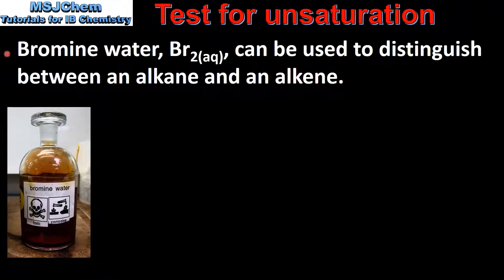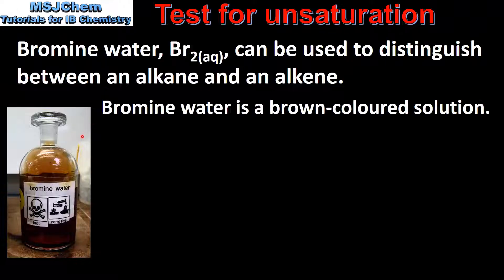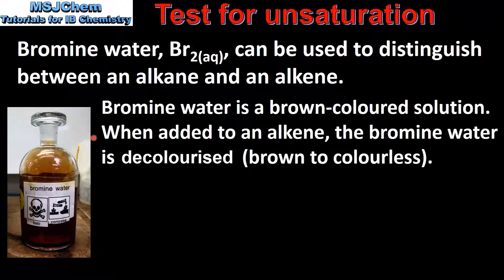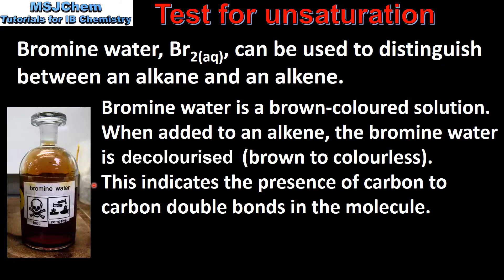Next we look at the test for unsaturation. Bromine water can be used to distinguish between an alkane and an alkene. Bromine water is a brown colored solution. When added to an alkene the bromine water is decolorized — the color change will be brown to colorless. This indicates the presence of carbon to carbon double bonds in the molecule, telling us that the molecule is unsaturated.